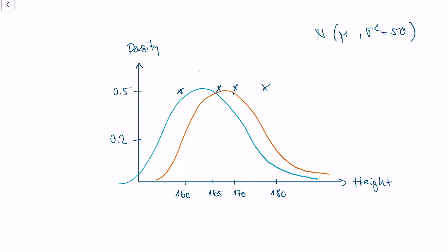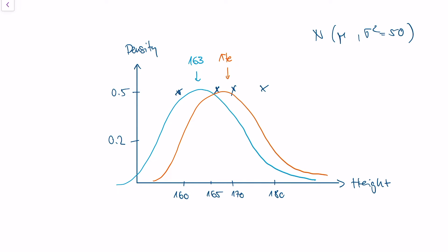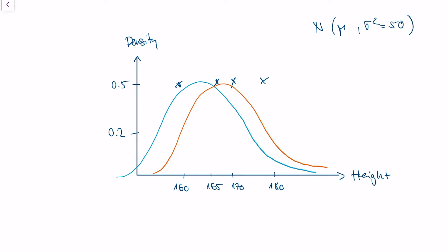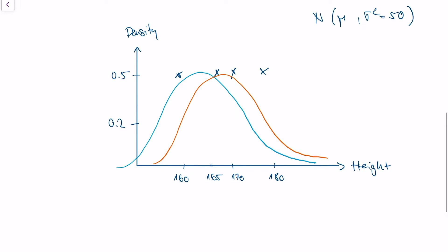One normal distribution has a mu of maybe 163 centimeters, and this other distribution has a mu of around 170. The question is: which distribution fits our data better? And here's where maximum likelihood estimation comes in — the idea is to use the distribution that best fits the data, in other words, that maximizes the density over the data.